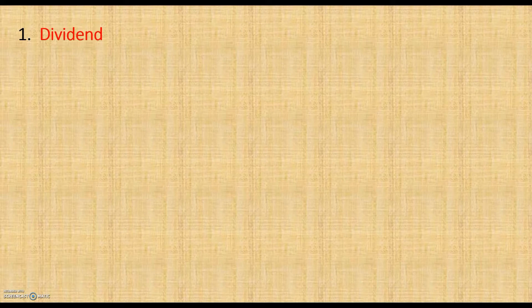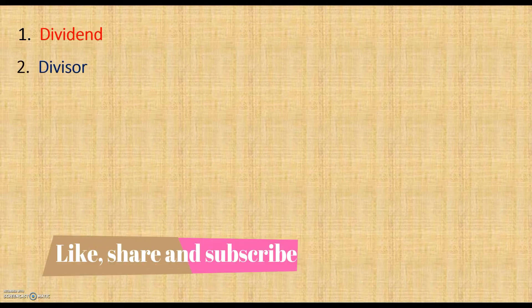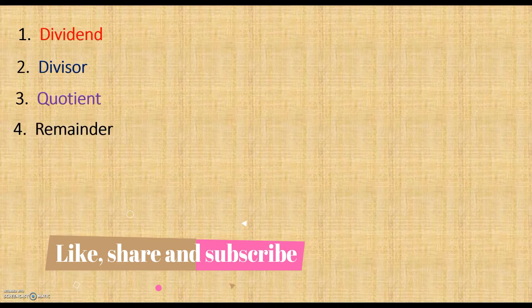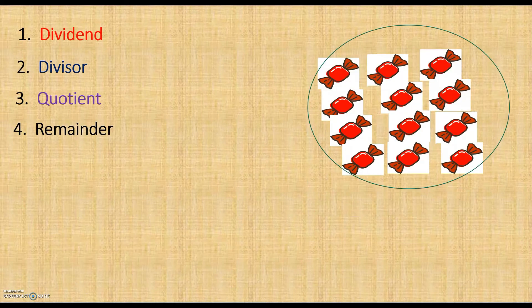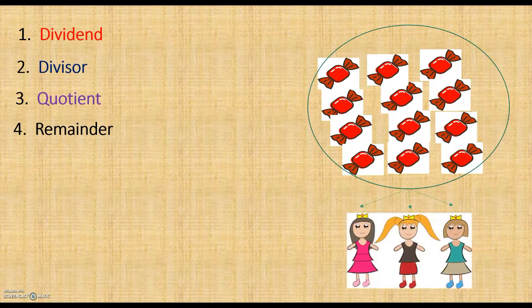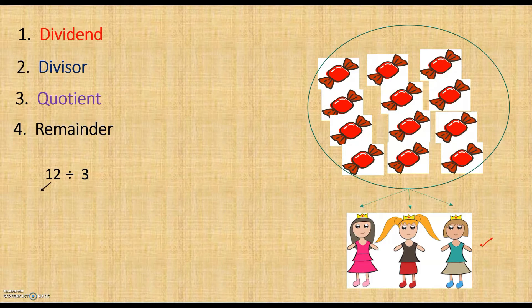First we will start with the keywords. The keywords are: dividend, divisor, quotient, and remainder. Let's understand these keywords with the help of an example. Here I have 12 chocolates which I want to distribute equally among three children. So how can we write it in division? We have a total of 12 chocolates, and we want to distribute them equally among three children, so we will write 12 divided by 3.